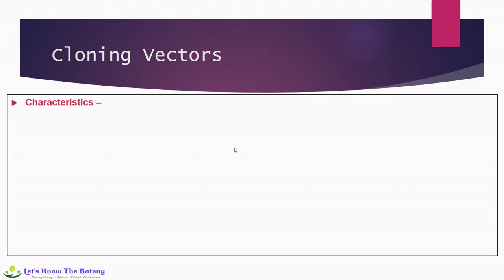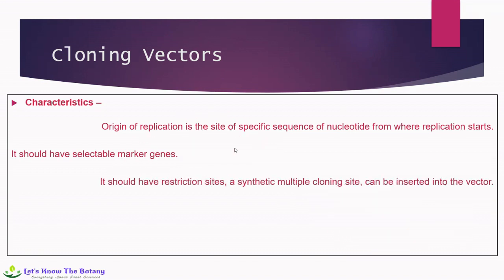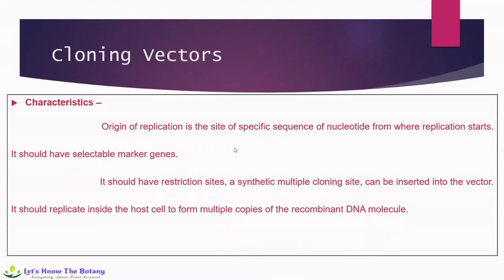As far as the characteristics of cloning vectors are concerned, the origin of replication is the site of a specific sequence of nucleotides from where replication starts. This site allows the vector as well as target DNA to amplify in the host cell. It should have selectable marker genes. Antibiotic resistance genes allow the host to grow on selective media and can selectively amplify the specific vector in the host cell. It should have restriction sites, and a synthetic multiple cloning site can be inserted into the vector to allow insertion of foreign DNA. It should replicate inside the host cell to form multiple copies of the recombinant DNA molecule, and it has a size less than 10 KB.